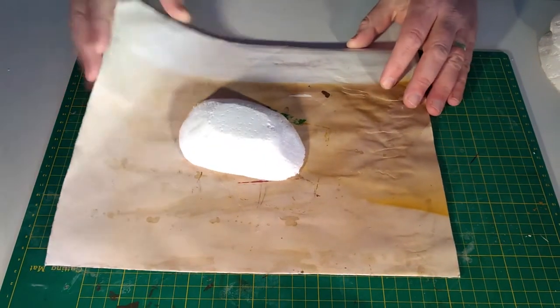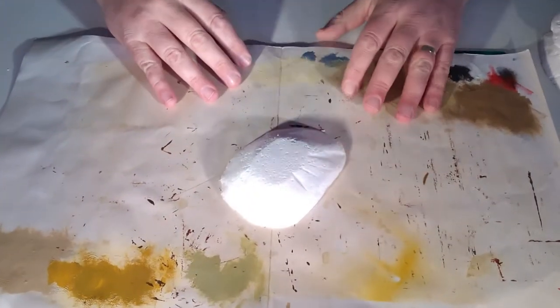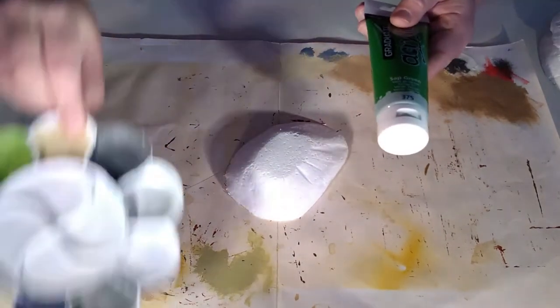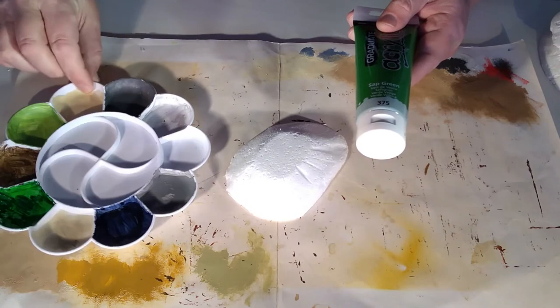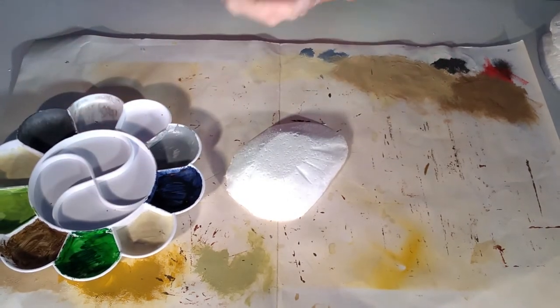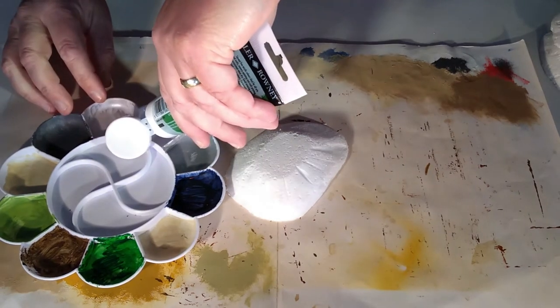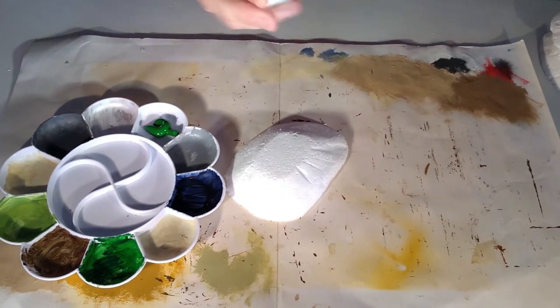The easiest technique is just to paint it with a suitable color. Firstly, to protect my work surface, I'm going to put down some paper. I've chosen a nice sap green shade of acrylic paint. I'm going to load my palette with my chosen color and give the hill a good coat of paint. When deciding on a terrain project, you'll need to choose the appropriate color scheme for your tabletop.